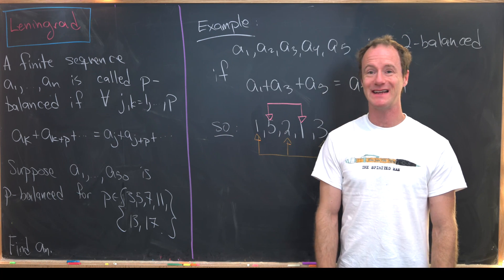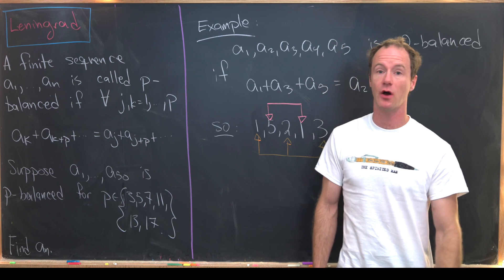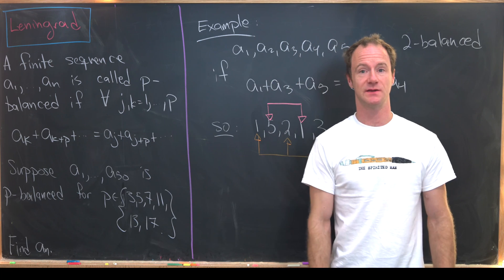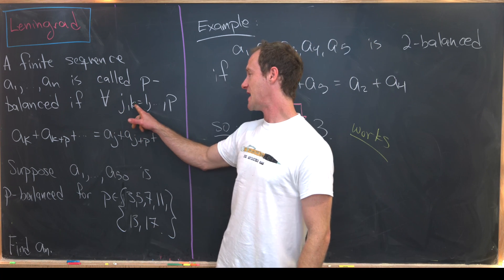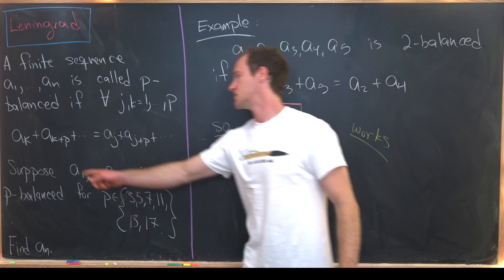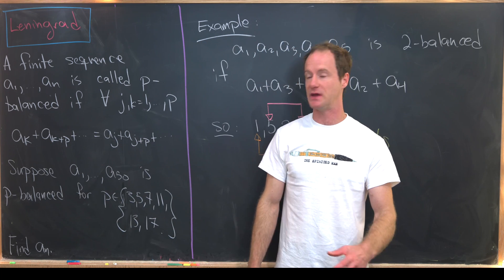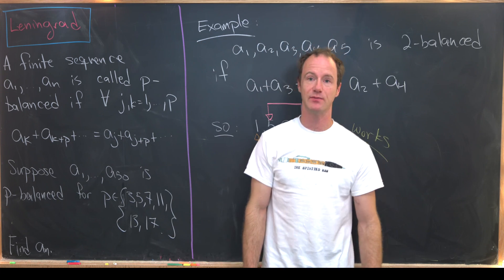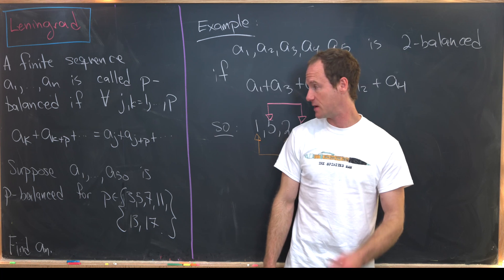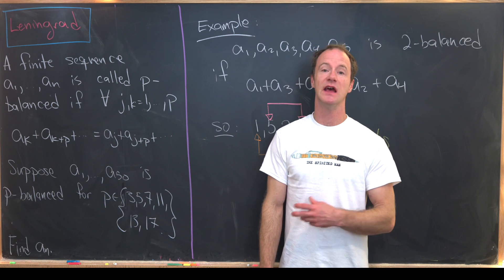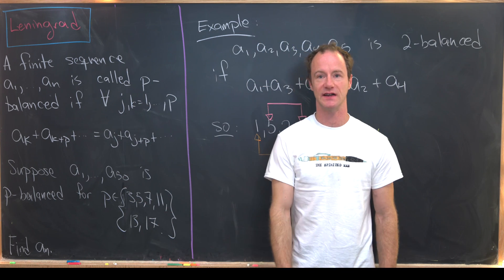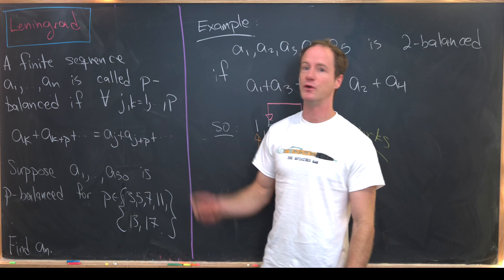We say a finite sequence a1, a2, a3, all the way up to an is p-balanced if for all j and k between 1 and p we have the following equality: ak plus ak plus p plus ak plus 2p and so on equals aj plus aj plus p plus aj plus 2p and so on. Since this is a finite sequence this is always a finite sum. You just stop when you run out of terms.